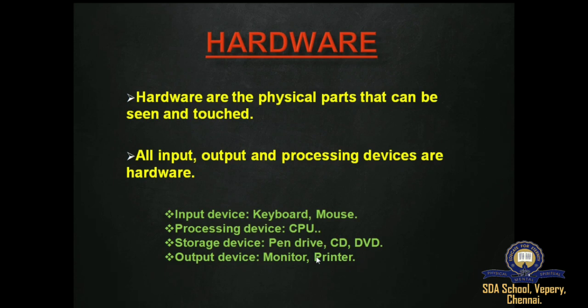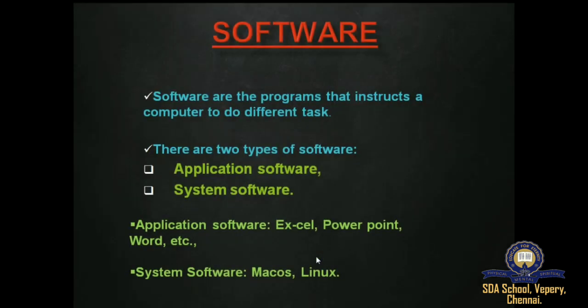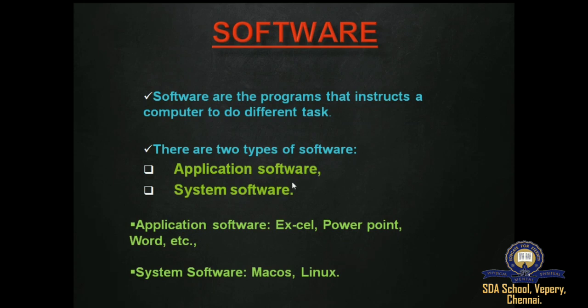Next we move on to software. Software are the programs that instruct a computer to do different tasks. Software is a set of instructions that tells hardware what to do. It is shown on the desktop in the form of icons, which you can neither touch nor feel. There are two types of software: application software and system software.